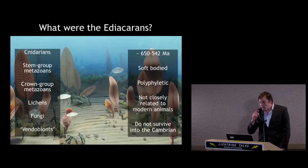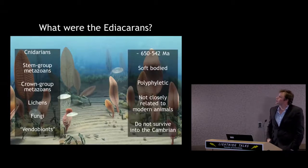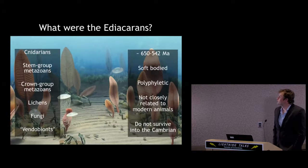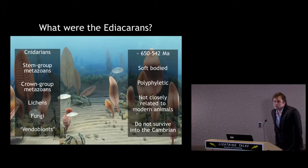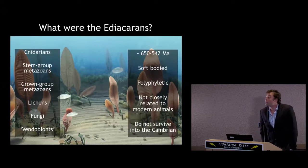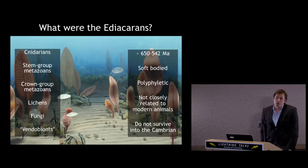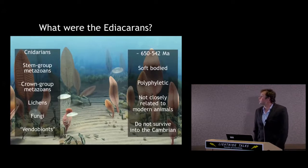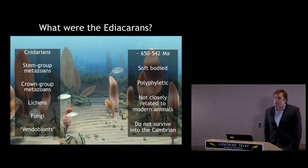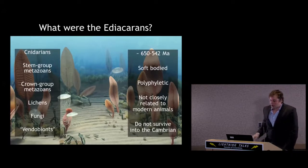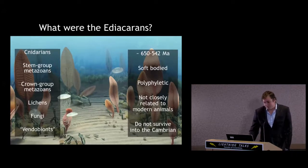But all we really know for sure is that they existed between 650 and 542 million years ago. They're entirely soft-bodied, they have no skeletonised or mineralised hard parts. They're probably not closely related to modern animals and they all went extinct at the Cambrian boundary.